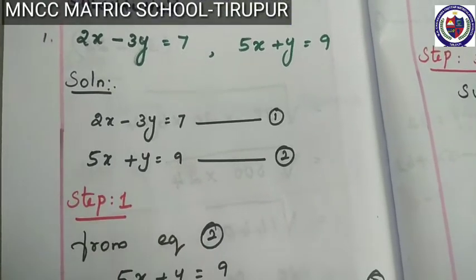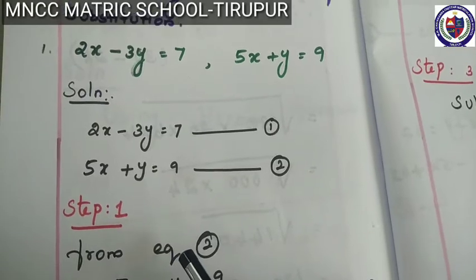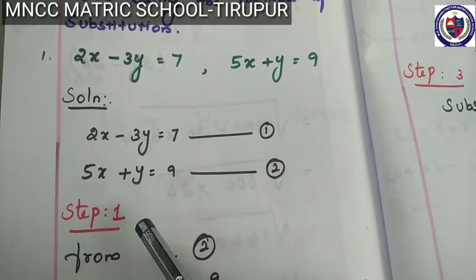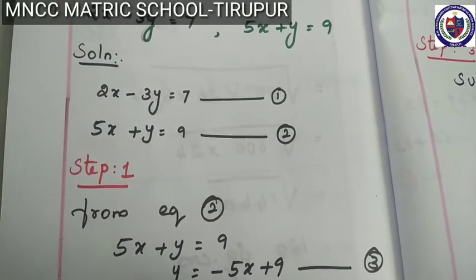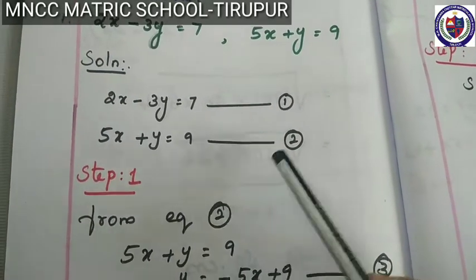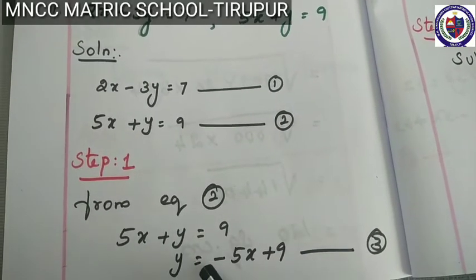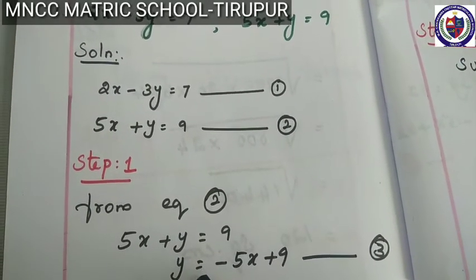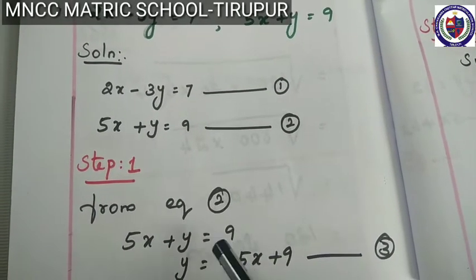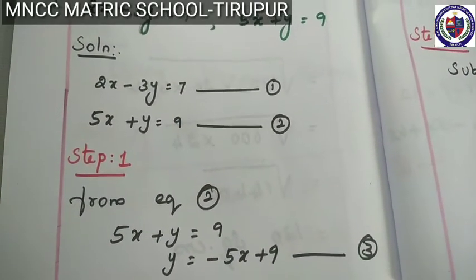Step number 1: from any of the given two equations, find the value of one variable in terms of the other. So from equation 2, which is 5x plus y is equal to 9, then y is equal to minus 5x plus 9. This is equation number 3. This is step number 1 - we find the value of one variable.